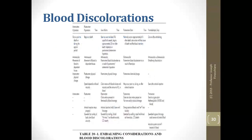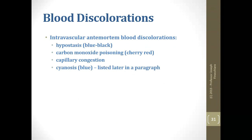Blood discolorations are covered well in Table 20 — I would print it out and write it from memory. Intravascular ante-mortem blood discolorations are important for both professional and classroom examinations. Hypostasis appears blue-black as blood pools and changes color. Carbon monoxide is almost universal with cherry red. Capillary congestion gives colors similar to hypostasis, and cyanosis — generally the blue baby presentation — is often seen under the fingernails.